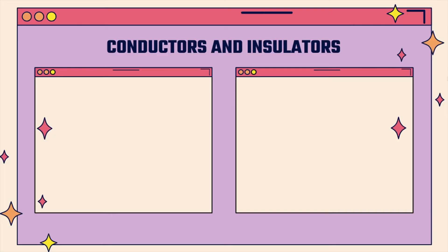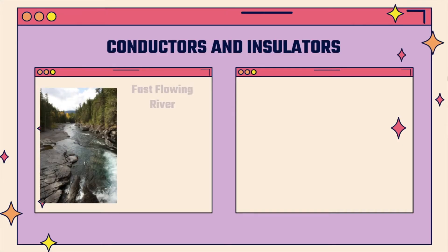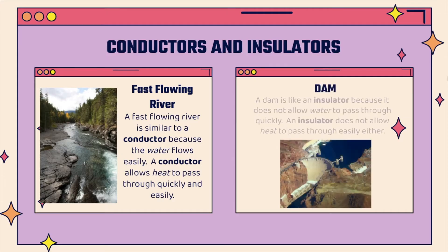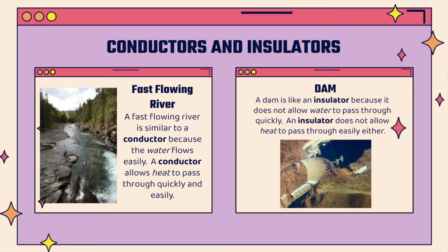Conductors and insulators — how can I explain this? Like a fast-flowing river. A fast-flowing river is similar to a conductor because the water flows easily. A conductor allows heat to pass through quickly and easily. A dam is like an insulator because it does not allow water to pass through quickly. An insulator does not allow heat to pass through easily either.